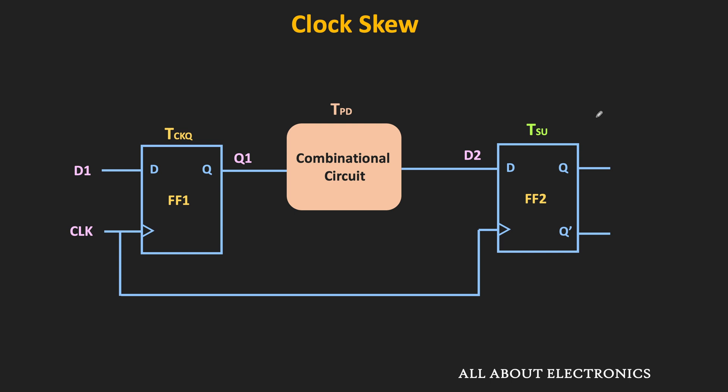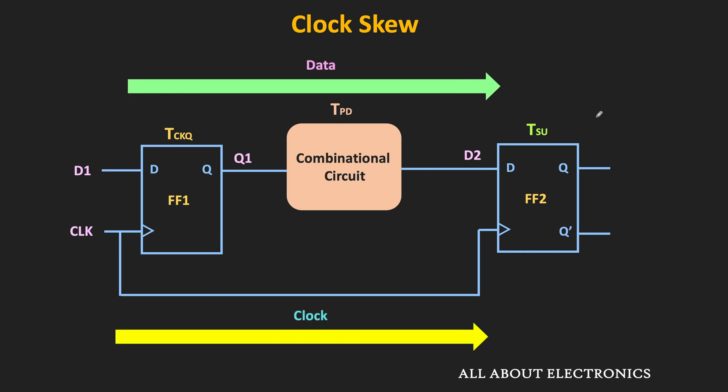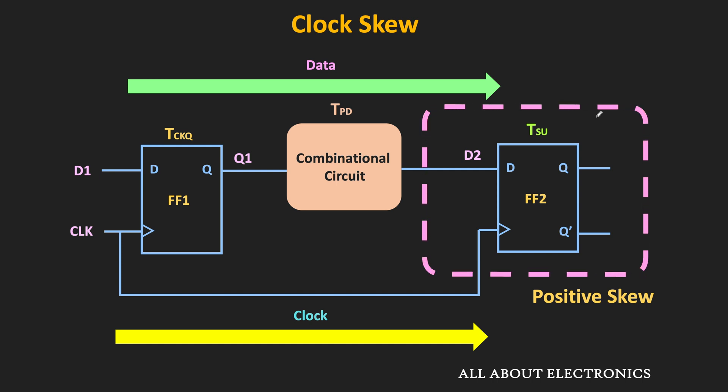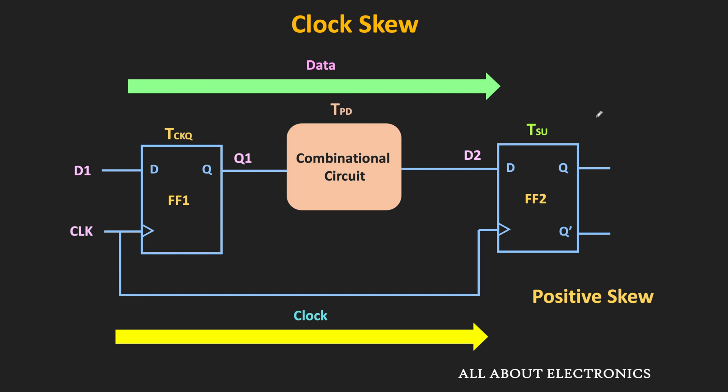In synchronous digital circuits, there are two types of skew: positive skew and negative skew. Whenever the data and clock signals travel in the same direction, we have positive clock skew. The first flip-flop receives data first, and then through combinational logic the second flip-flop receives the data — the data path flows left to right. Since the clock signal also flows in the same direction, the first flip-flop receives the clock earlier than the second flip-flop. If Tclock1 and Tclock2 are the times when the two flip-flops receive the clock signal, then in positive skew their difference is positive.